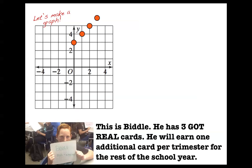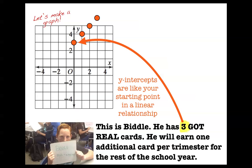Hopefully you see that this is a linear relationship, like all the other linear relationships that we have been talking about. What I want you to now see is where is the y-intercept of this linear relationship? Oh, it's at 3. Because the y-intercept of a line, it's like your starting point in a linear relationship. Biddle started with 3 Got Real cards, and then he's getting additional ones after that.